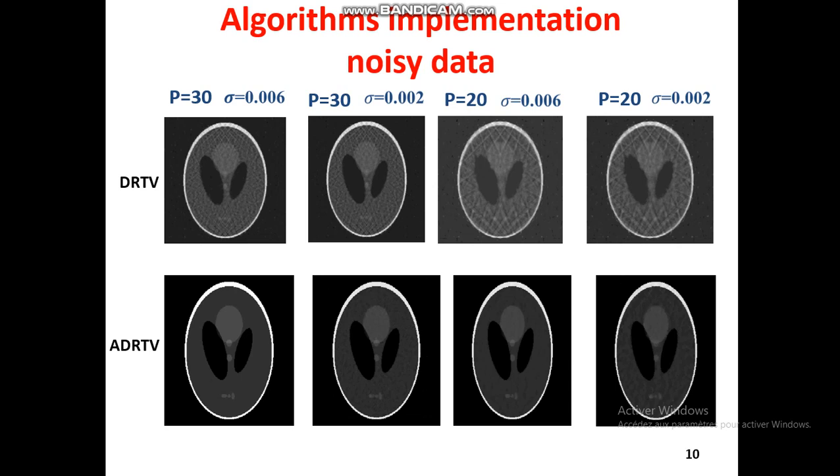Now, we show you the results for the noisy data. We used, respectively, 30 projections and 20 projections with two noise values. You can see the obtained images by ADRTV are better. Quantitatively, you can see the results are better than the others.